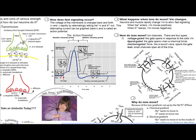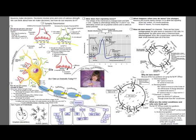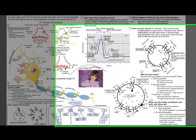Voltage-gated channels are drawn here. Ligand-gated channels are drawn over here. Our next question is what happens when ions do move? And the answer is that the voltage of the membrane changes.